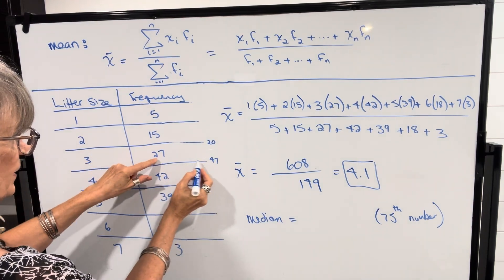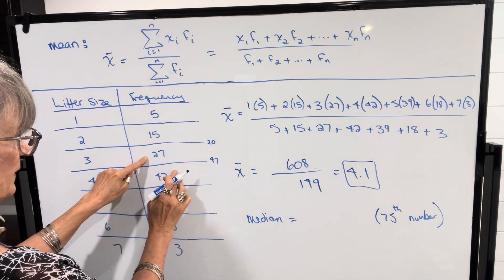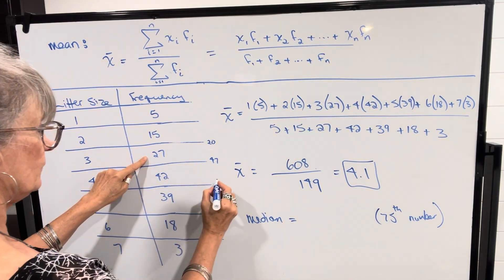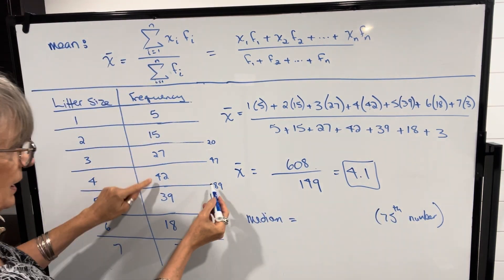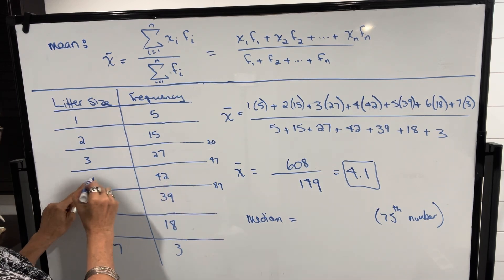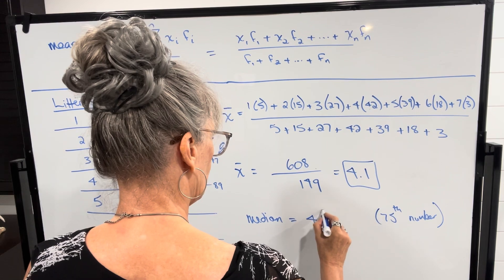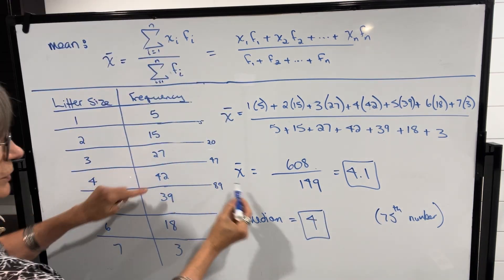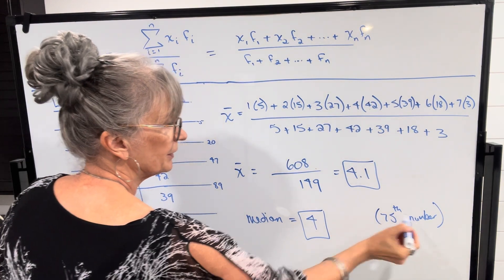And then this would be 47 plus 42 would be 89. So I know my 75th number is going to be in this category, would be litter size of 4. So my median would be 4. You find what category your middle number would be in.